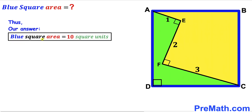After all the calculations, the area of blue square ABCD turns out to be 10 square units — that's our final answer. Thanks for watching and please don't forget to subscribe for more exciting videos.